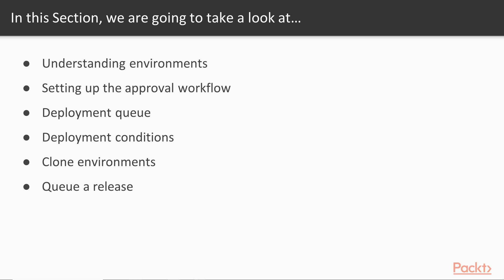Lastly, we're going to queue a release. We've been going through this whole course but haven't actually queued a release yet, so this is the section where we're going to fire it off in a couple of different ways — through a continuous integration or continuous deployment scenario, with a manual deployment, and with a scheduled deployment. So there are three different ways in which we can deploy our software into the environments.